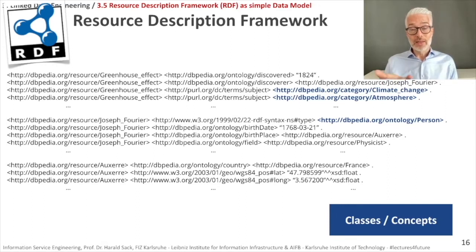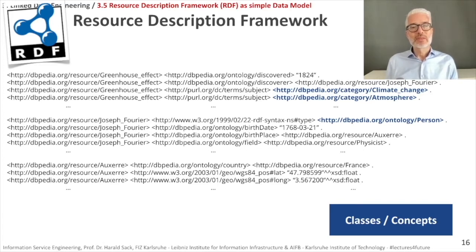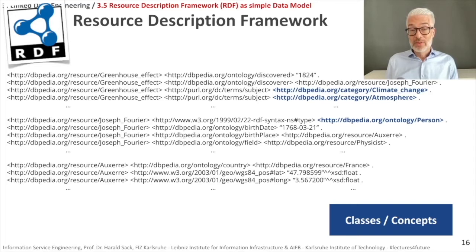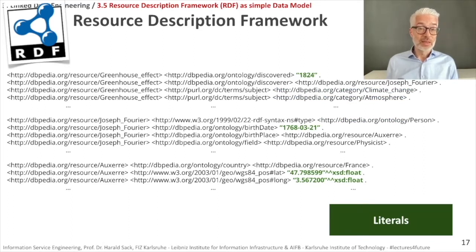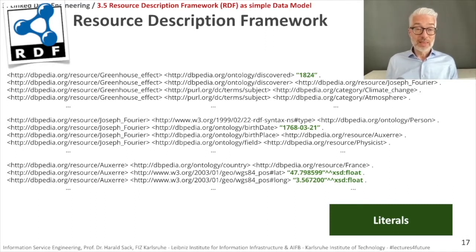On the other hand, you also see classes or concepts on the object part. For example, the Greenhouse Effect has the subject climate change and is related to the atmosphere. Joseph Fourier is connected to the class Person, which belongs to the DBpedia ontology. We also have literals: numbers, strings, dates, and typed literals — for example, latitude and longitude given as floats. For typed literals, you must also give the type, which has a specific kind of encoding.